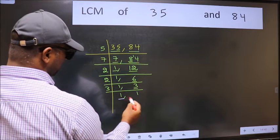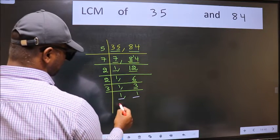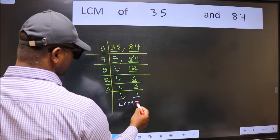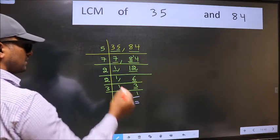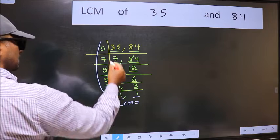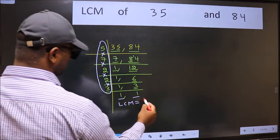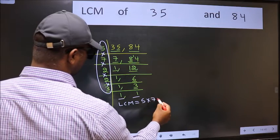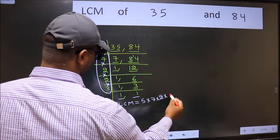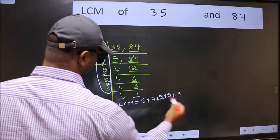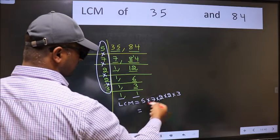So we got 1 in both places. So our LCM is the product of these numbers. That is 5 times 7 times 2 times 2 times 2 times 3. When we multiply these numbers, we get 420 as our LCM.